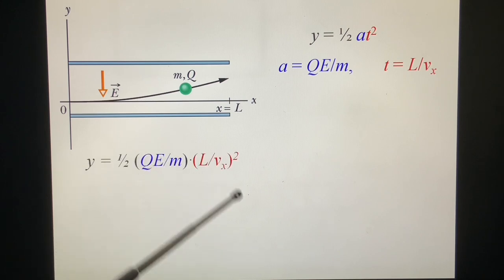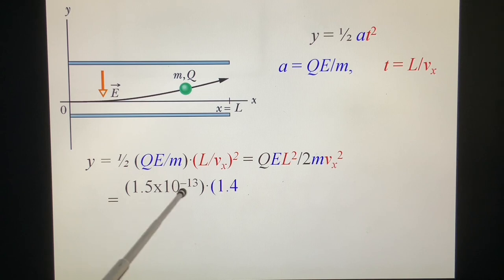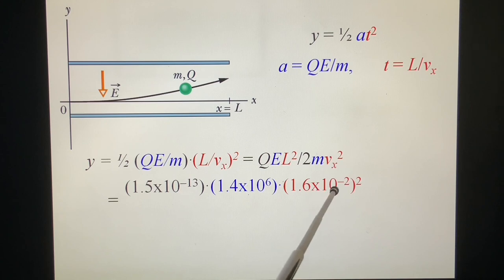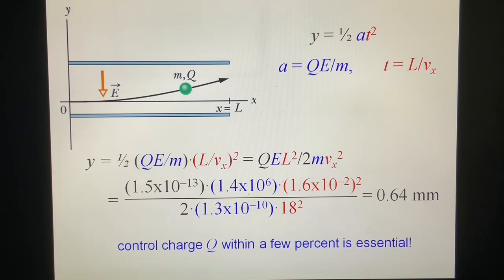We put this one inside, we get y. This is a, this is t, and we put everything inside. So we get q is given 1.6×10⁻¹³. E is 1.4×10⁶. L, 1.6×10⁻² squared. Over 2m is 1.3×10⁻¹⁰. And v is 18 squared. We get 0.64. It's a very small number. So we'll be very careful control the charge q within a few percent is essential.